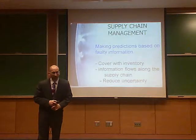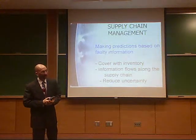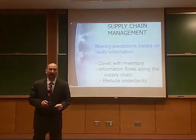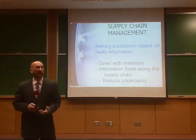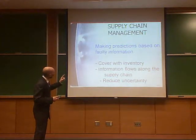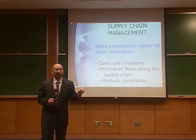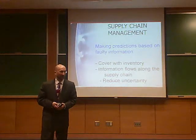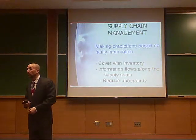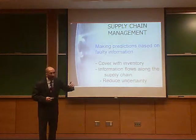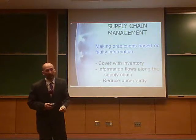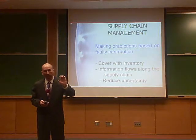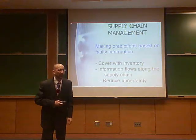Can you imagine being in a job where you have to predict the future on a regular basis? That's what they do in supply chain management — always making predictions based on faulty, incomplete, or inaccurate information. When we don't have the correct amount of information, we cover it by adding inventory. Inventory and information are equated together: the better information we have, the less need we have for inventory. Supply chain management is about reducing uncertainty around that information flow.